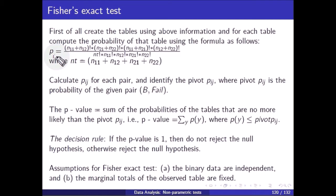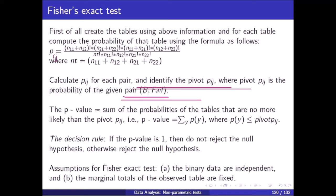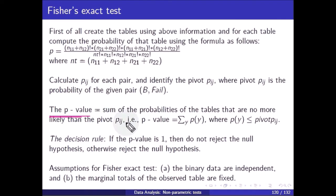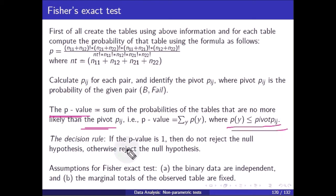Identify the pivot p_ij, which is the probability of the given observed pair. The p-value is the sum of the probabilities of tables that are no more likely than the pivot p_ij — that is, the summation of p where p_y is less than or equal to p_ij. The decision rule: if the p-value equals 1, do not reject the null hypothesis; otherwise reject the null hypothesis.